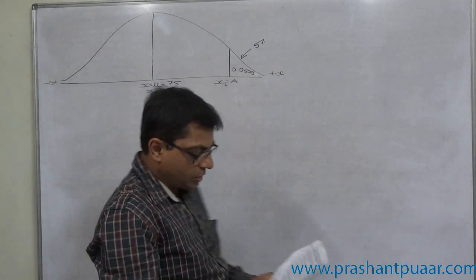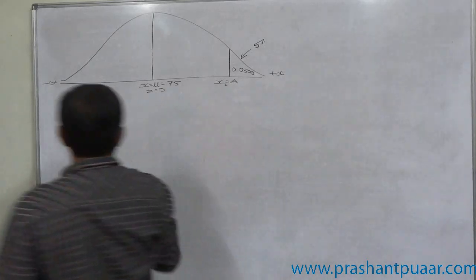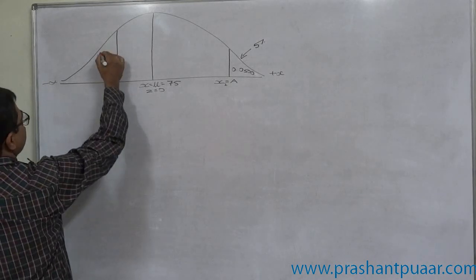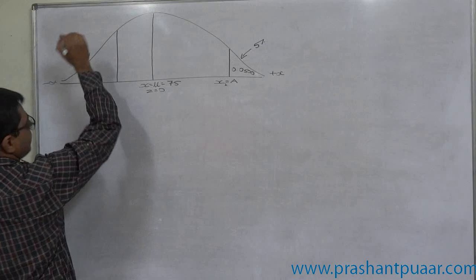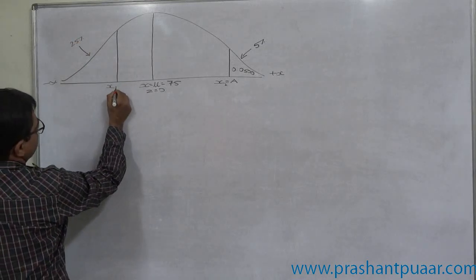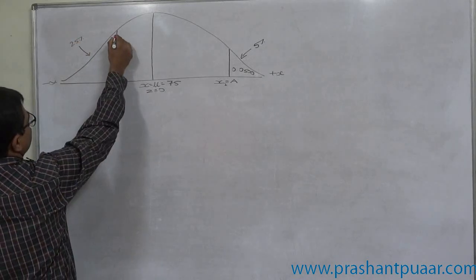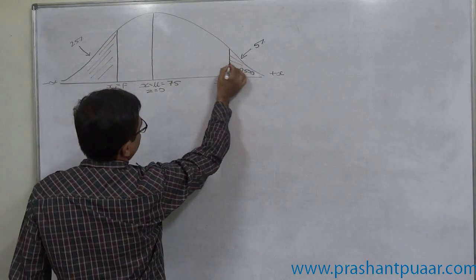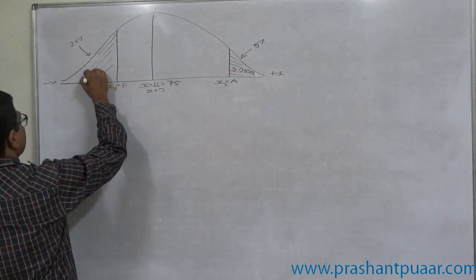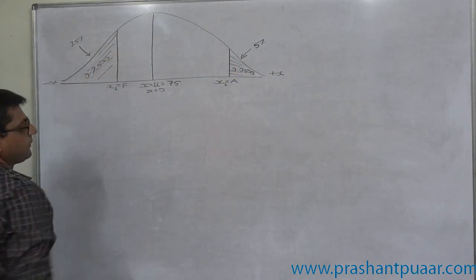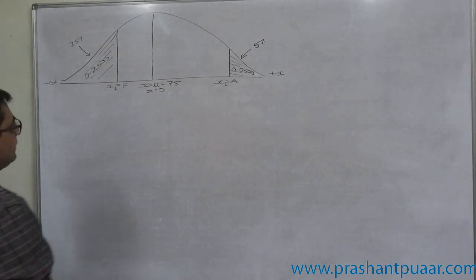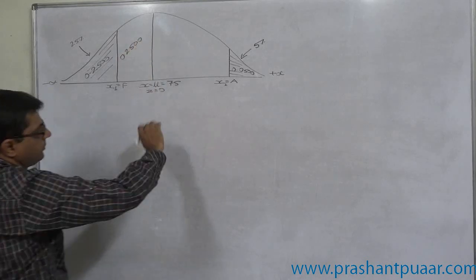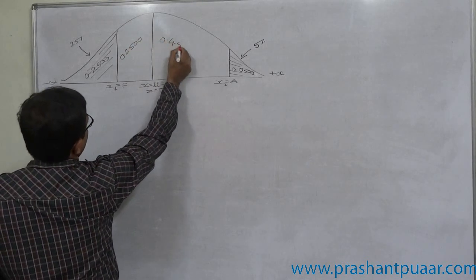Bottom 25 percent get grade F. Bottom 25 percent, that means this 25 percent. This difference is also 0.25 and this difference is 0.45.